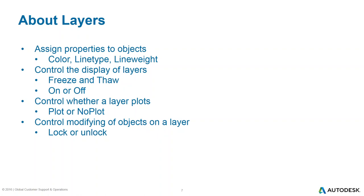Layers also allow us to display only what we want to see. Freeze and thaw are the switches we can toggle on a layer. They both primarily do the same thing, except freeze actually tells AutoCAD to ignore the layer completely — pretend it's not even in the drawing database. When you turn a layer off, it's like switching off the lights in a room — you walk in and bump into the furniture. Whereas with freeze, nothing remains in that room.